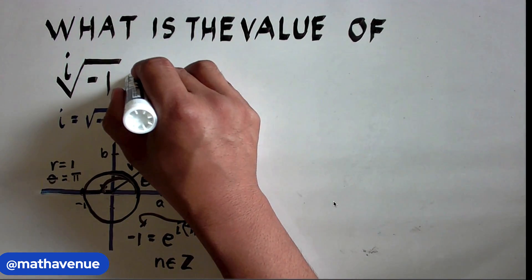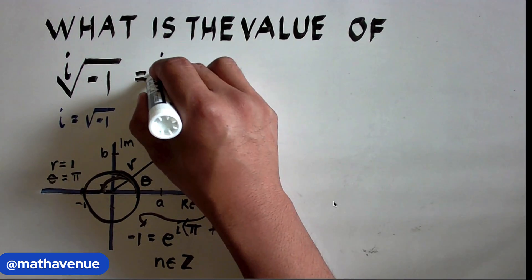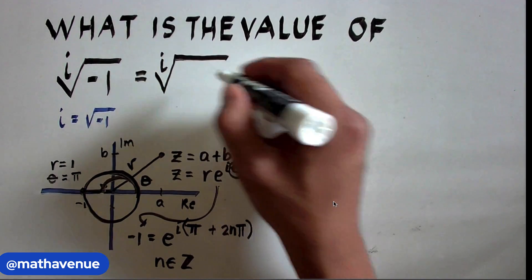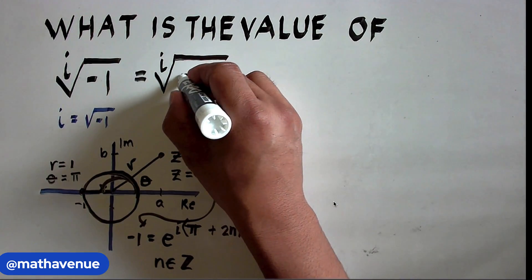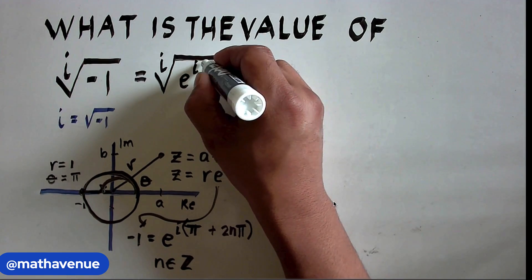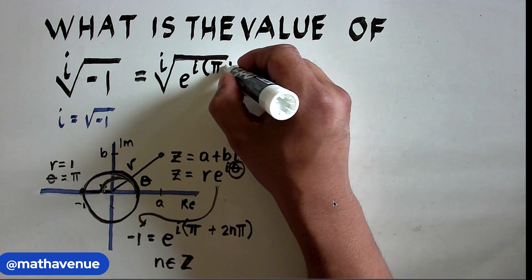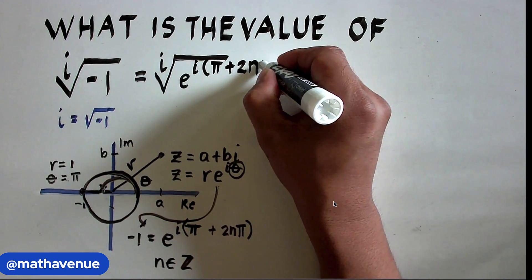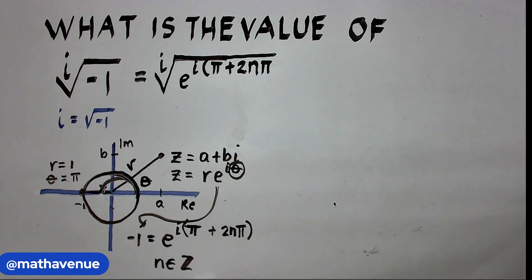And therefore, we can now write this to be equal to the i-th root of e^(i(π + 2nπ)), where n is an element of the set of integers.